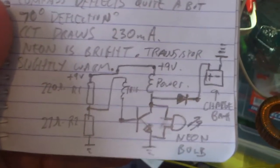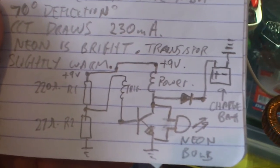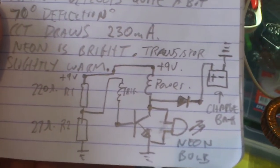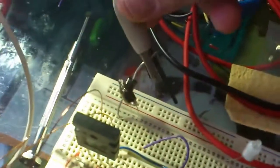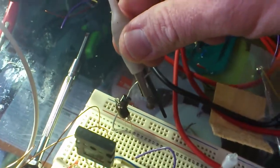Now just to show you the spikes coming out of this to the charge battery, there's a neon bulb across the meter and collector. If I just take this lead off the charge battery...